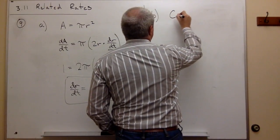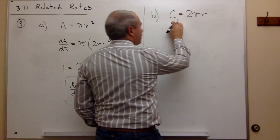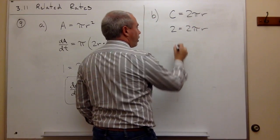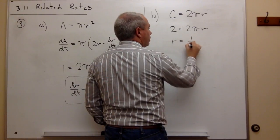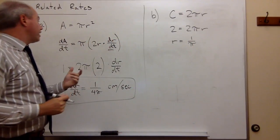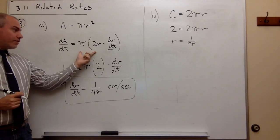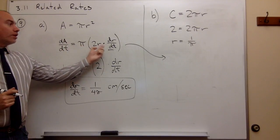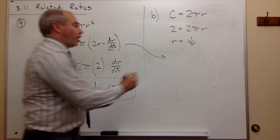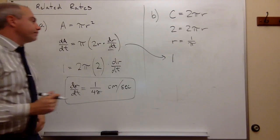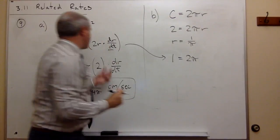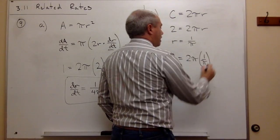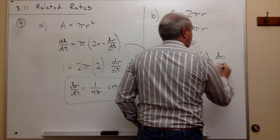The circumference of a circle is 2 pi r. If the circumference is 2, then 2 equals 2 pi r, which gives r equals 1 over pi. I'll plug this into the same equation: dA/dt equals pi times 2r times dr/dt. We know dA/dt is 1, giving 1 equals 2 pi times r. With r equal to 1 over pi, I plug in 1 over pi and solve for dr/dt.